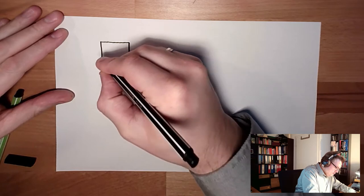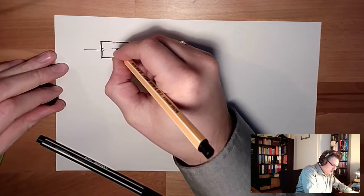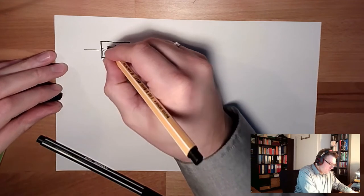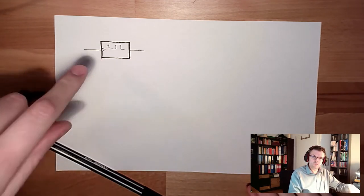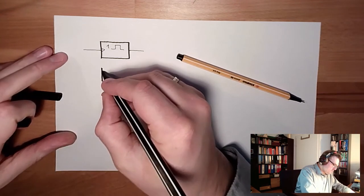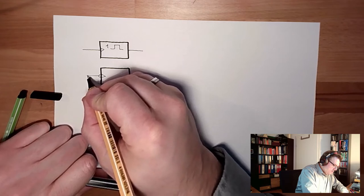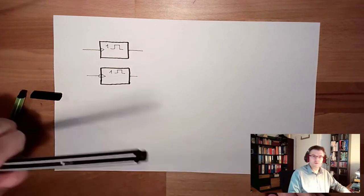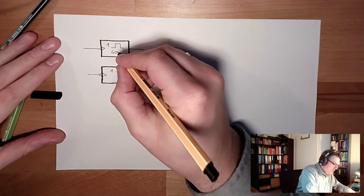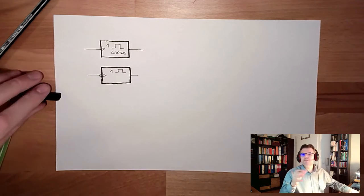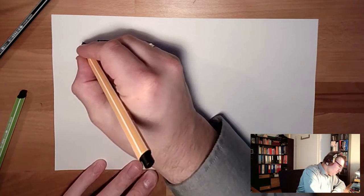The symbol looks like this. There's the input, and this will trigger the output. This is reacting on the rising edge — and of course there's also the possibility that it reacts on the falling edge. Usually we have written here how long — say 400 milliseconds — this instable state is. There is the input and there is the Q output.